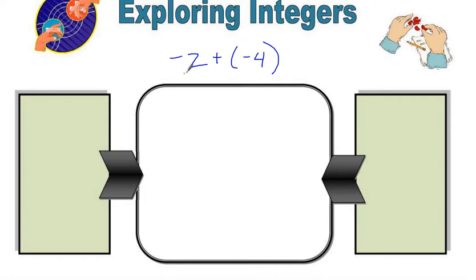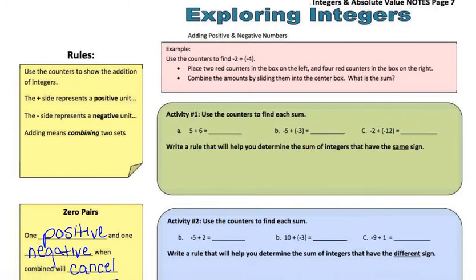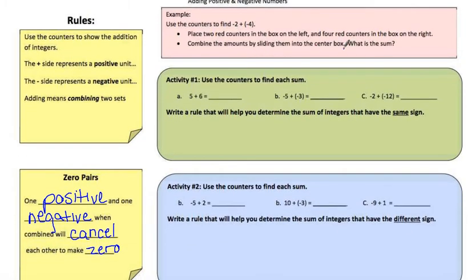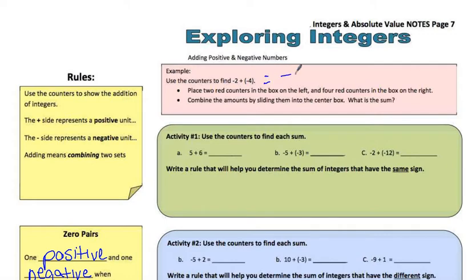We have negative 2 as our first number, so I'm going to write two negatives. Then we have four negatives: 1, 2, 3, 4. They come together — we bring in the 2 and the 4. We have negative 2 and negative 4. We combine them and then find the sum. Counting them up: 1, 2, 3, 4, 5, 6 negatives. So my answer is negative 6.